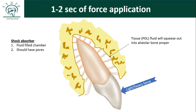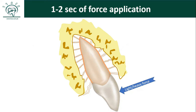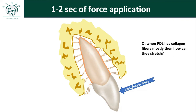Since tissue fluid has been squeezed out of the periodontal chamber, there will be some movement of the tooth within the alveolar socket. You can notice that in some areas there is stretching of PDL fibers and in other areas there is compression. A question arises: since most PDL fibers are collagen and you cannot stretch collagen — just as you cannot stretch a rope, only a rubber band — how is PDL getting stretched?